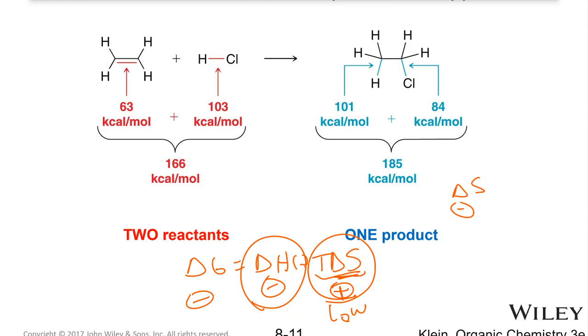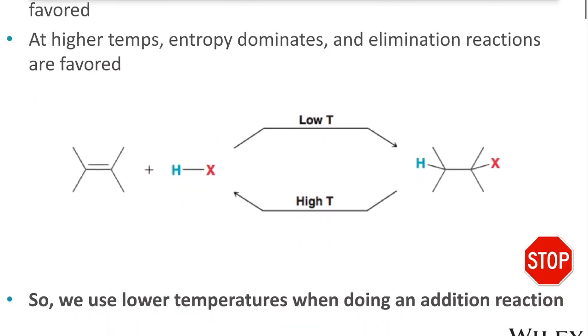But if we keep the temperature high, then our T delta S term is going to be larger, and that's going to make our delta G positive, which will favor reactants. So what does that mean? It means that at low temperature, addition reactions will occur, and at high temperature, elimination reactions will occur. So when we do an addition reaction, we want to do that at a lower temperature, maybe room temperature, or maybe even add ice, because if we heat it up too much, we will get the reverse reaction, which is an elimination.